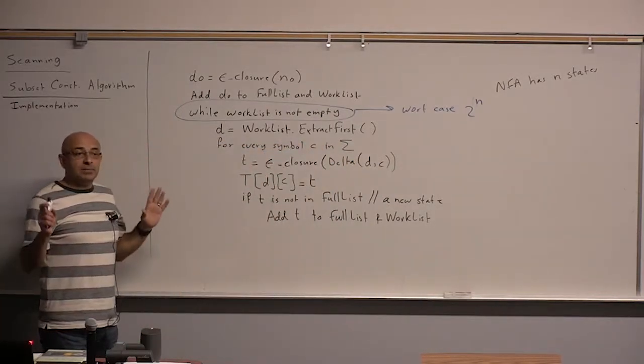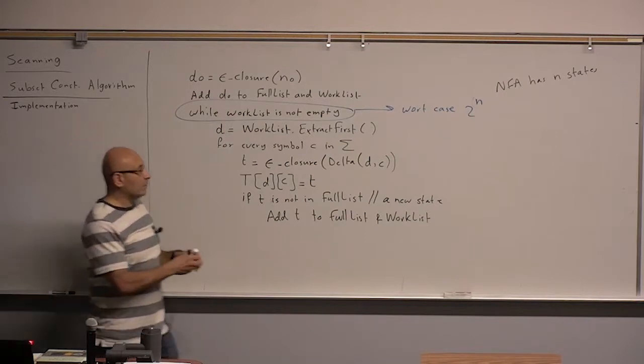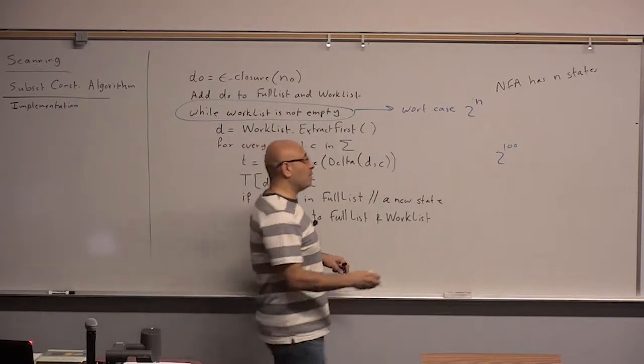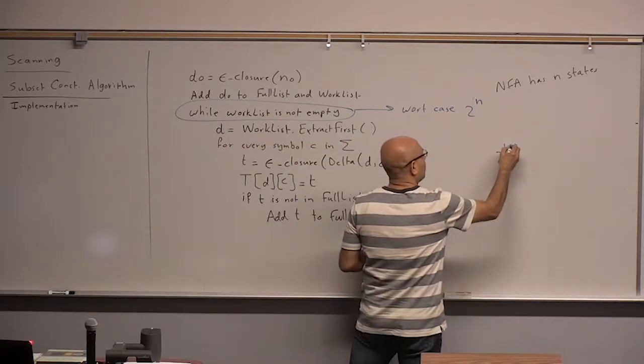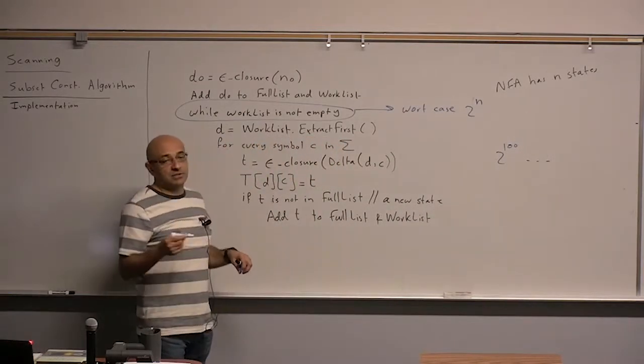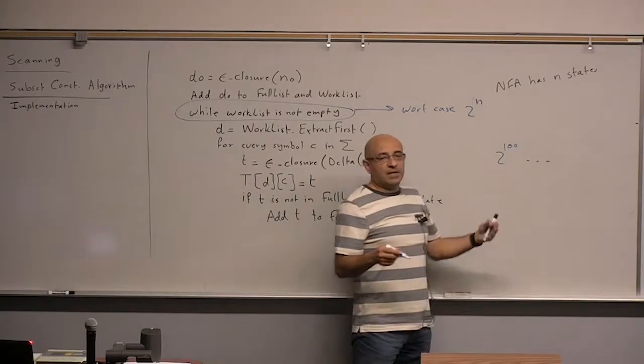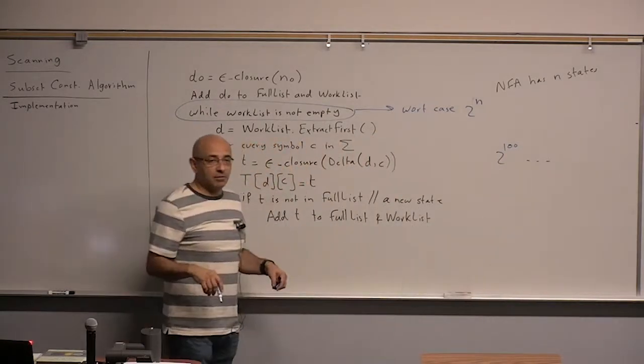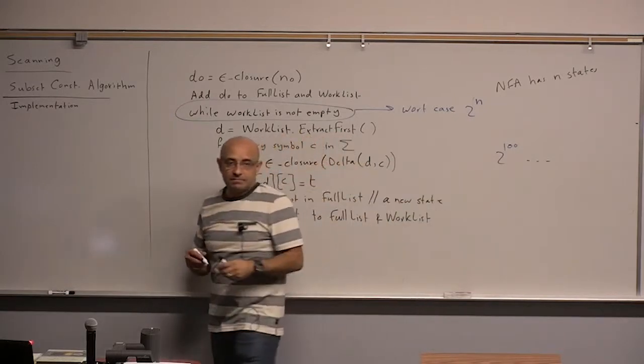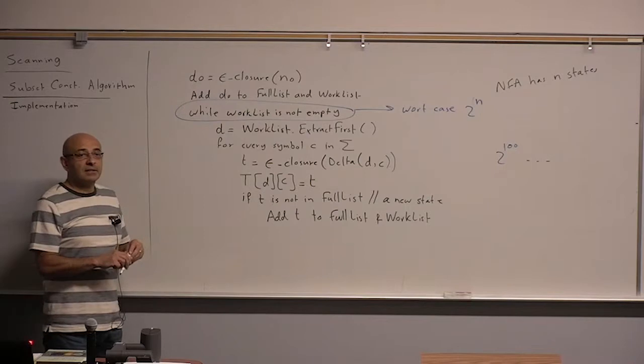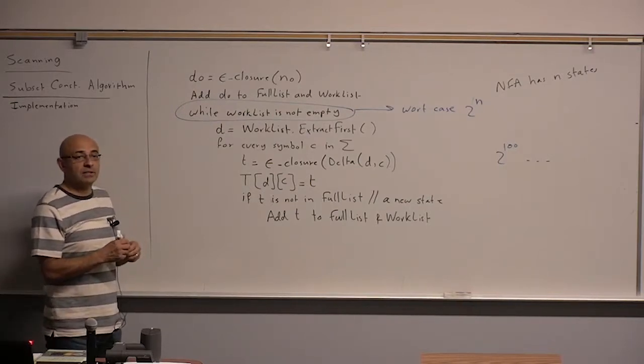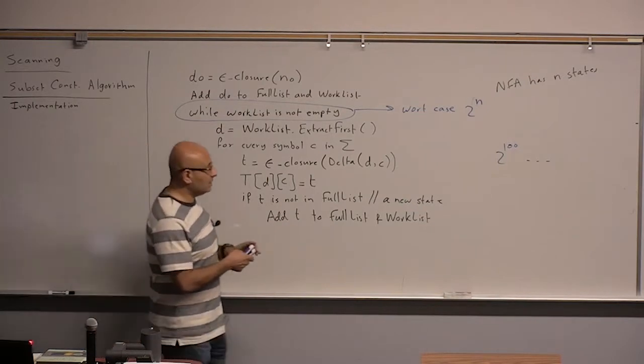So, if you have 2 power 100, if you do the math for 2 power 100, that will correspond to millions and millions of billions of years, in fact, on a typical computer. If you do the math for 2 power 100, that's going to be a ridiculous number of years. So, now the question is, why is this, this is done in practice and it works fine. So, why does this work fine? Because they probably eliminate duplicate states out of the work list.